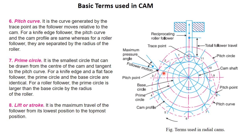Throughout the motion of the follower, as the cam lifts from one position to another, the total lift of the follower is measured as the distance between those two positions. This is called the total lift or stroke of the follower. It defines the total motion desired from the reciprocating or translatory output.